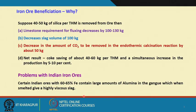This is a good example from the Indian iron ore beneficiation industry. If you look at the problems with Indian iron ores: certain Indian ores with 60 to 65 percent Fe — if you do a stoichiometric calculation, a pure hematite (Fe₂O₃) can have only 70 percent Fe. So when you have 60 to 65 percent Fe in your mined ore, it means the ore is more than approximately 90 percent pure.